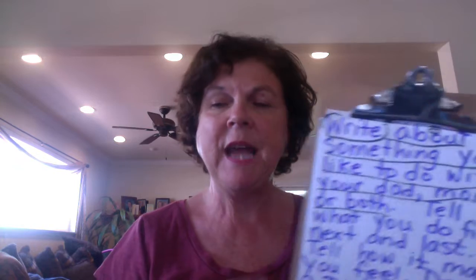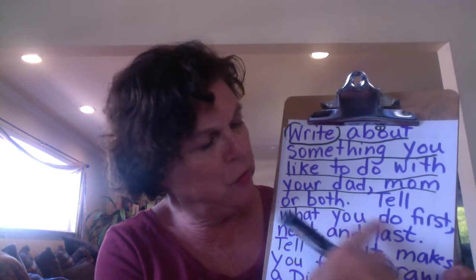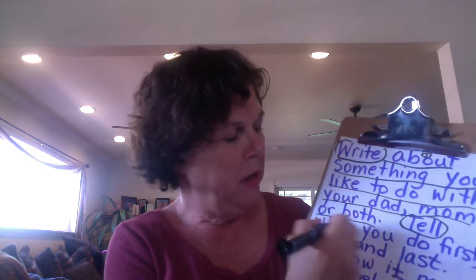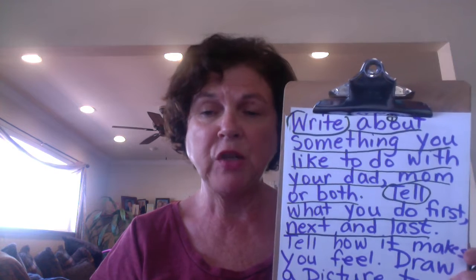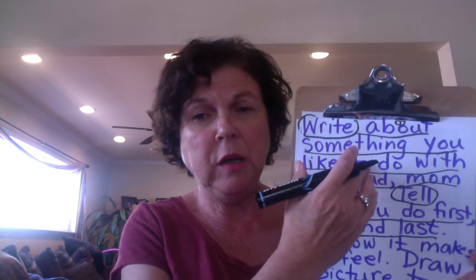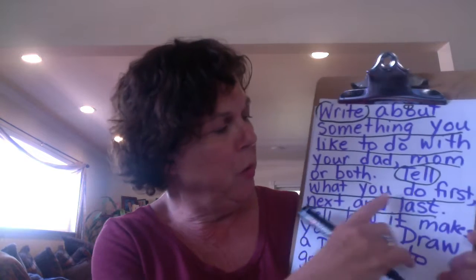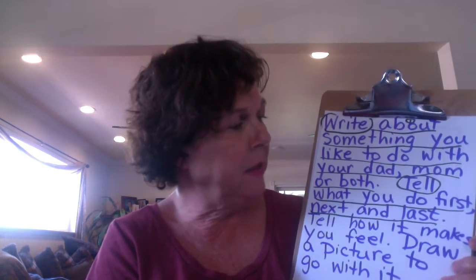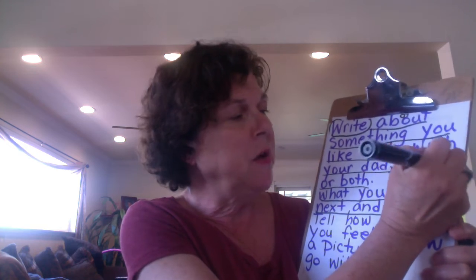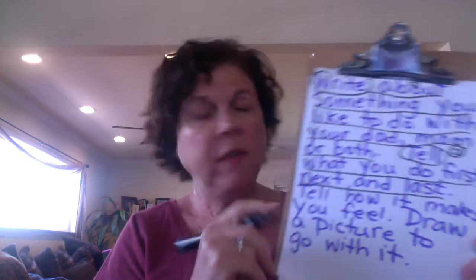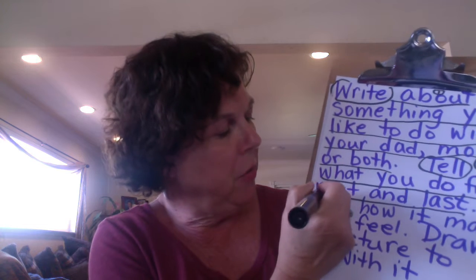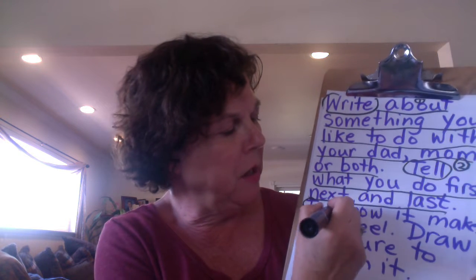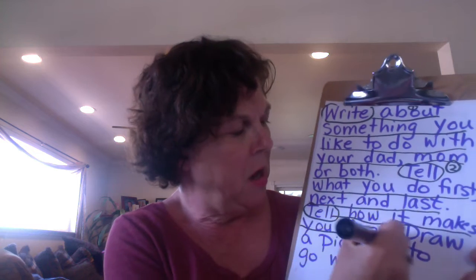Then it says 'tell what you do first, next, and last.' I'm going to circle the word 'tell' and underline what comes after that, because 'tell' is a verb — it's an action word. So after we write about something we like to do, then we're going to tell about what you do first, next, and last. I'm going to put a two there because that's another important thing we have to do in our writing.